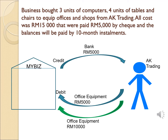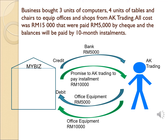For the delayed payment portion: we received office equipment worth RM10,000, so we debit office equipment RM10,000. The outflow of RM10,000 is a promise to AK Trading to pay the installments, so we credit AK Trading RM10,000. When a debt is involved, we must put the name of the specific person or entity, otherwise we would not know who we owe. So we credit AK Trading RM10,000 and debit office equipment RM10,000.